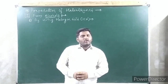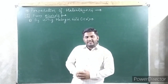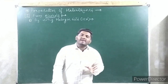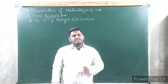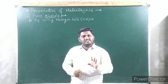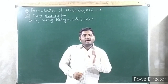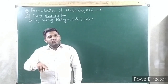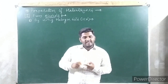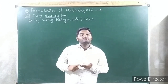In today's class we are going to talk about preparation of haloalkanes. Without wasting time, let us start. Preparation of haloalkanes can be done by many methods. The first method is from alcohols. The general formula for alcohols is ROH. From alcohols, again 3 sub-methods are there: using halogen acid, using thionyl chloride, and using phosphorus halide.